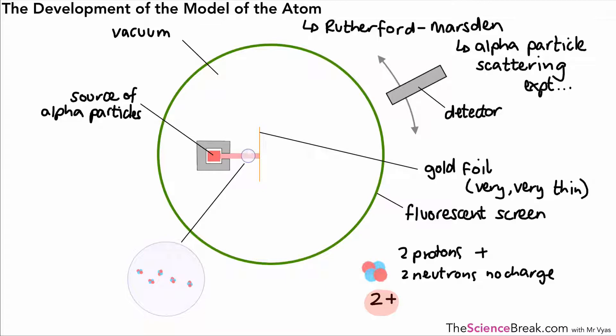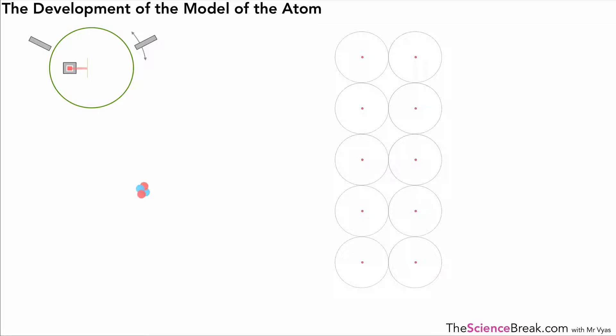If we just magnify a little bit the gold foil, I've drawn it as a couple of atoms thick and here's that alpha particle and it's being fired at the gold foil. The results of where it goes were recorded on the fluorescent screen.